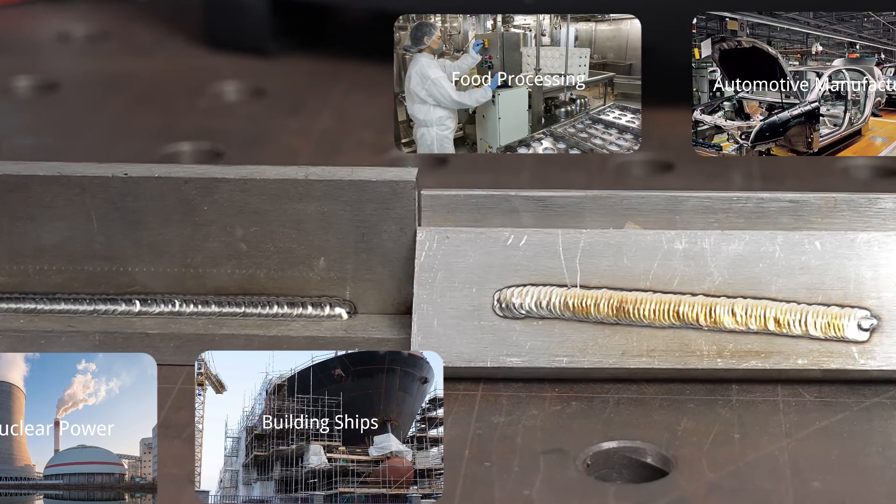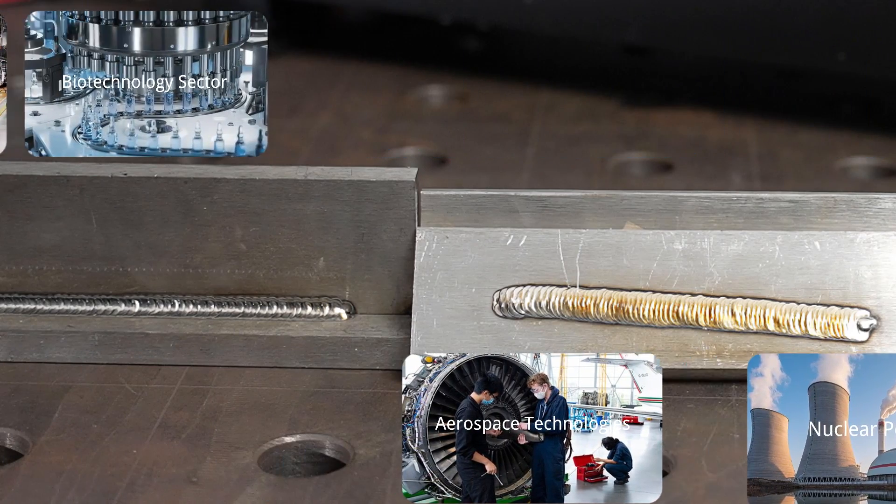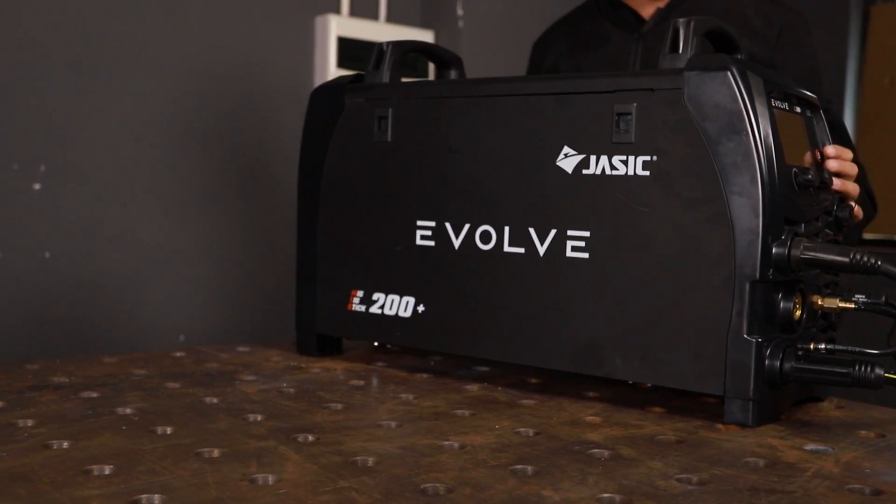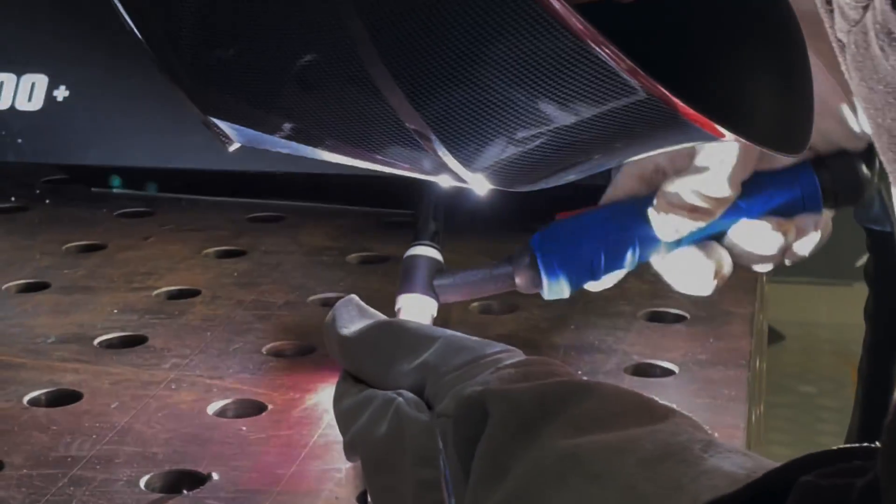In some industries, only silver or chrome color welds which indicate minimum oxidation are considered acceptable. Today, we'll explore how to achieve stunning golden welds on stainless steel using TIG welding techniques.